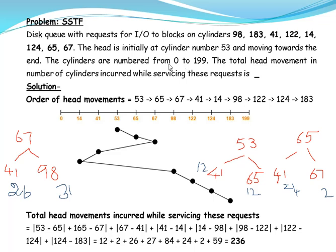Consider there are 200 cylinders numbered from 0 to 199, and the head is initially at cylinder number 53 and it is moving towards the end — that is, from 53 it is moving towards 199. There are a set of requests: 98, 183, 41, 122, 14, 124, 65, and 67. We have to calculate the total head movements incurred by this algorithm while servicing these requests.